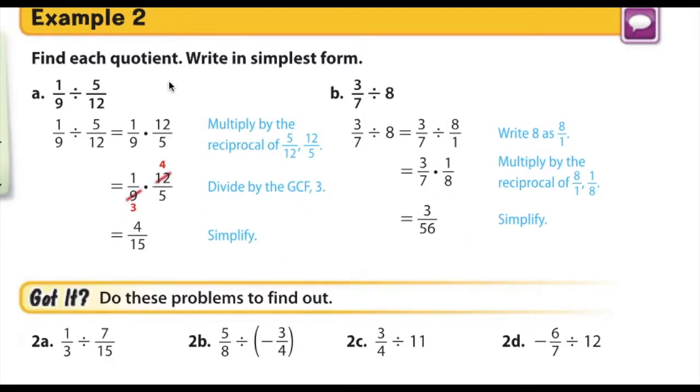For example 2, we are going to be dividing fractions. Take a second to look at the examples and then try 2a, b, c, and d on your own. If you want to follow along with me and do the problems, that's fine. Otherwise, press pause, try the problems on your own, and then check your answer. 1 third divided by 7 fifteenths is the same thing as 1 third times 15 sevenths. I'm going to cancel here to make it a little bit easier to multiply. 1 times 5 is 5, and 1 times 7 is 7. 2a should be 5 sevenths.